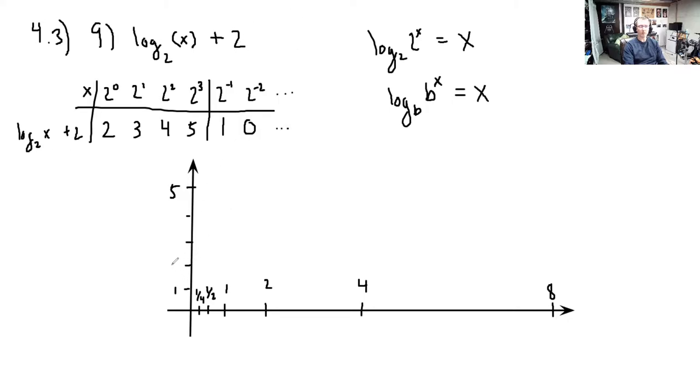So 1, 2, 3, 4, and 5. So let's just plot the points. So when we plugged in 2 to the 0th, that was 1, we get 2. When we plugged in 2 to the 1st, that's 2, we get 3. When we plugged in 2 squared, we got 4. 2 to the 3rd, which was 8, we got 5. 2 to the negative 1st, we got 1. 2 to the negative 2nd, we got 0.